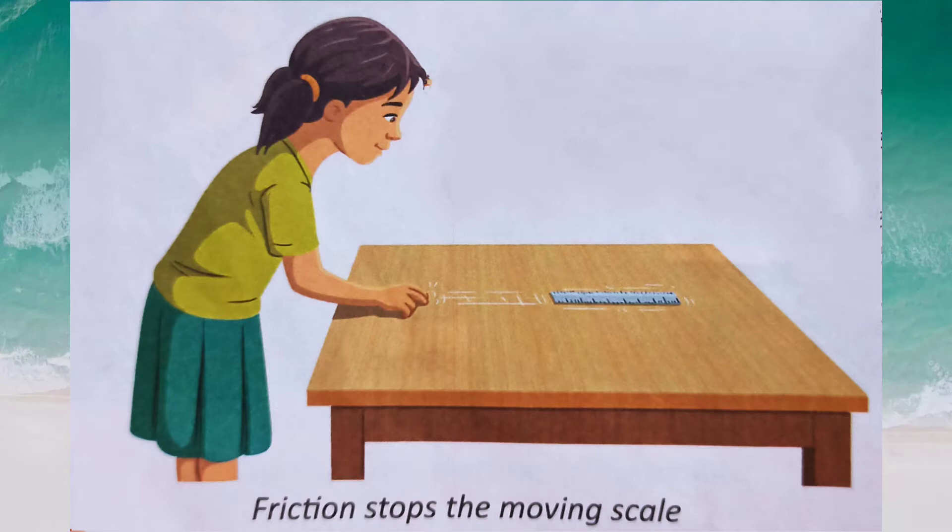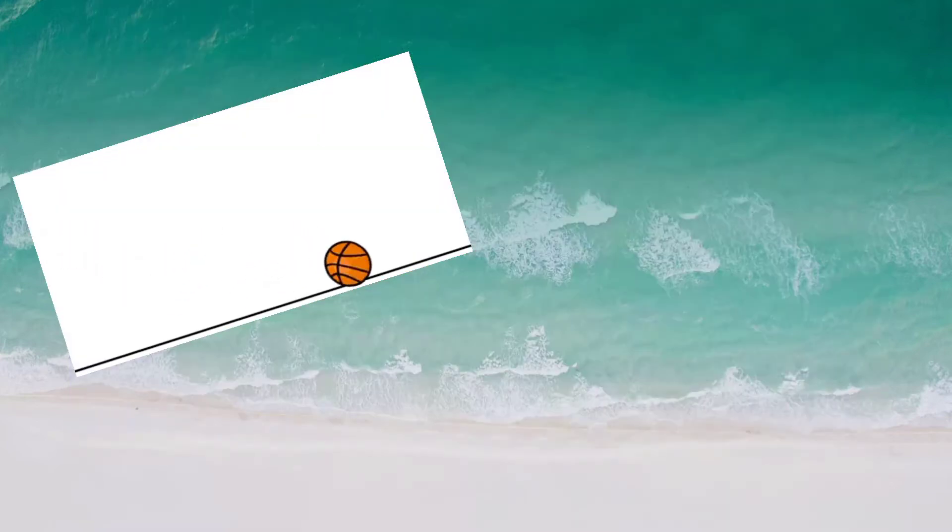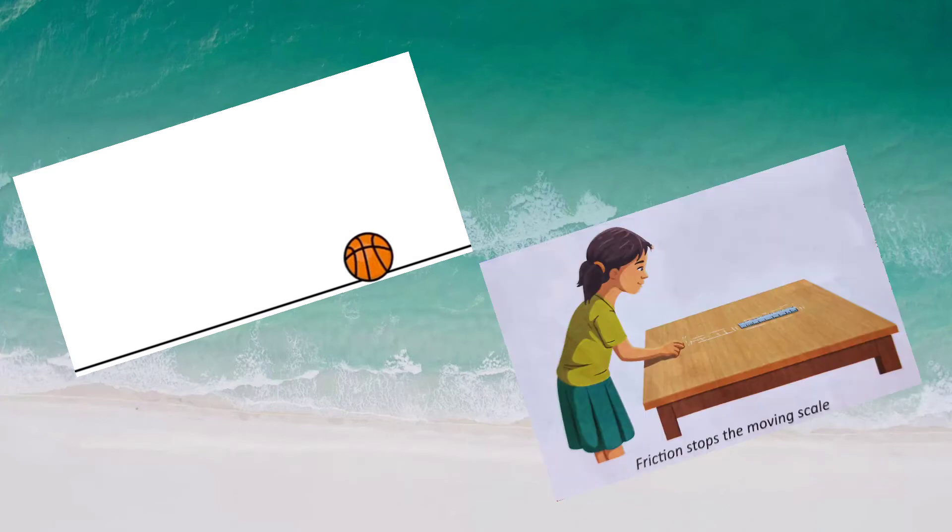When a ruler is pushed across a table, it stops after moving a certain distance. In both the cases, the ball and the ruler stop because of friction.